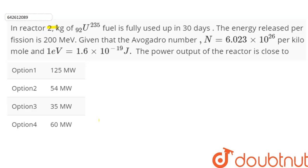In a reactor, 2 kilograms of uranium-235 fuel is used up fully in 30 days. The energy released per fission is 200 mega electron volts. Given that the Avogadro number N is equal to 6.023 into 10 to the power 26 per kilo mole and 1 electron volt is equal to 1.6 into 10 to the power minus 19 joule.